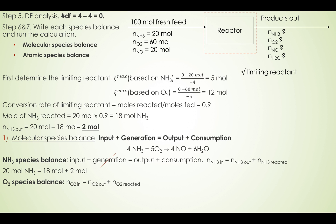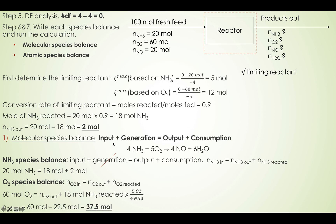Next, the oxygen species balance. Oxygen is the same as ammonia — from the reaction there is no generation of oxygen. So we cancel the generation term: oxygen input = oxygen output + oxygen consumption. Input of oxygen is 60 moles. We don't know the output, but we can calculate the oxygen consumption from the moles of ammonia reacted using stoichiometry. The moles of oxygen in the output equals 60 minus 22.5 moles consumed, giving 37.5 moles oxygen in the output stream.